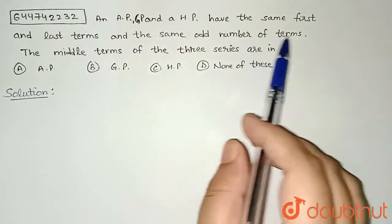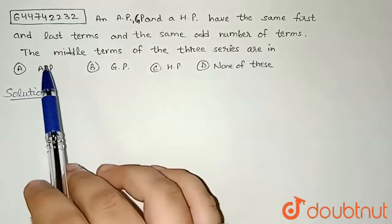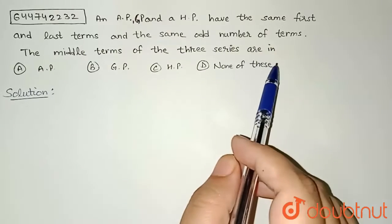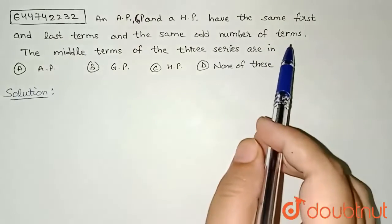AP, GP, and HP have the same first and last terms and the same odd number of terms. The middle terms of the three series are in... So we are given an AP, GP, and HP and these have the